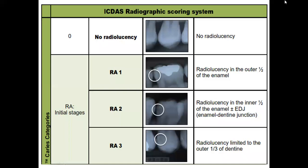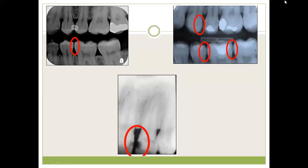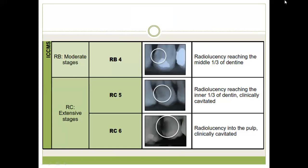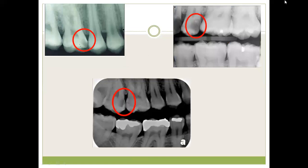Coming to the radiographic scoring system: 0 is no radiolucency; 1 is radiolucency limited to the outer half of enamel; 2 is radiolucency limited to the inner half of enamel or the enamel-dentin junction; 3 is radiolucency limited to the outer one-third of dentin; 4 denotes radiolucency reaching the middle third of dentin; 5 denotes the inner third of dentin which is clinically cavitated; and 6 is radiolucency involving the pulp. Various radiographs demonstrate these stages from early enamel lesions through to pulpal involvement.